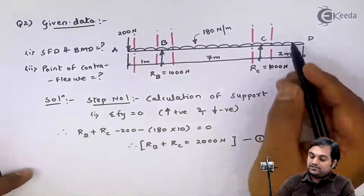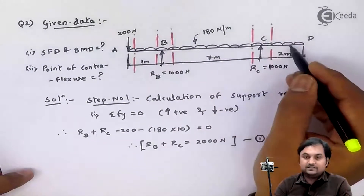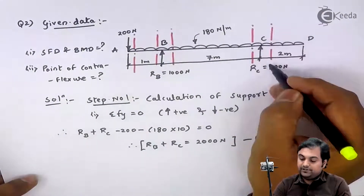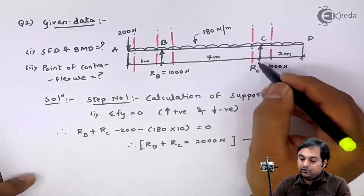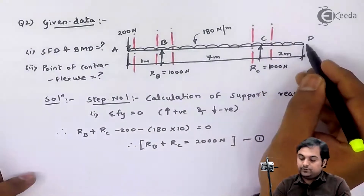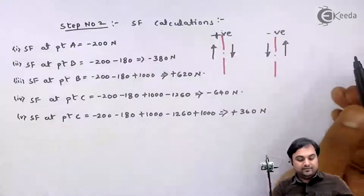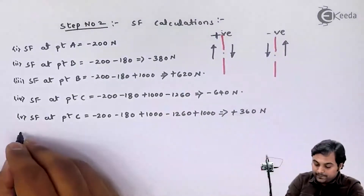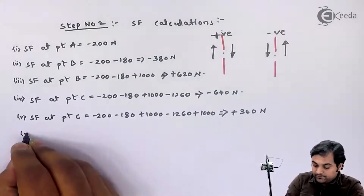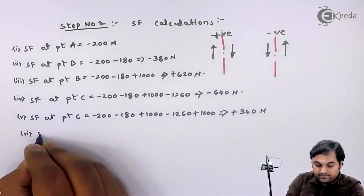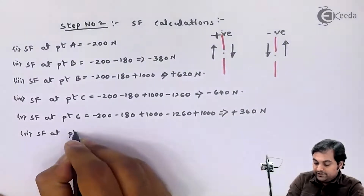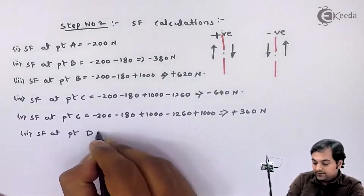SF at RC has been calculated. Next, at point D the shear force equals 0. So SF at point D is equal to 0.